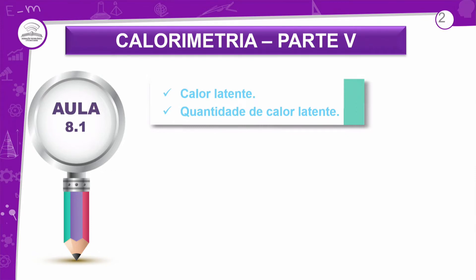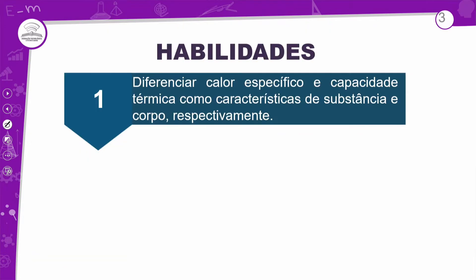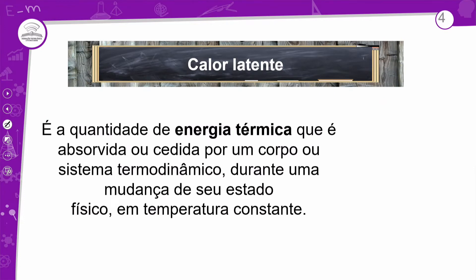O que isso quer dizer? Quer dizer que, além de saber o que é o calor latente, eu tenho que saber qual a quantidade necessária para fazer algum objeto mudar de fase. A habilidade aqui é definir calor específico e capacidade térmica como características de substâncias e corpo, respectivamente. Então, o que é esse calor latente? É a quantidade de energia térmica que é absorvida ou cedida por um corpo ou sistema termodinâmico durante uma mudança de estado físico em temperatura constante.